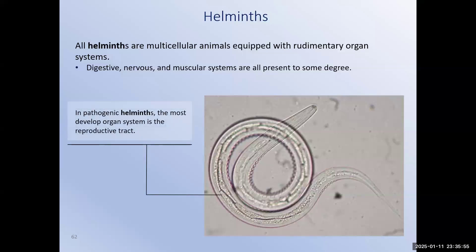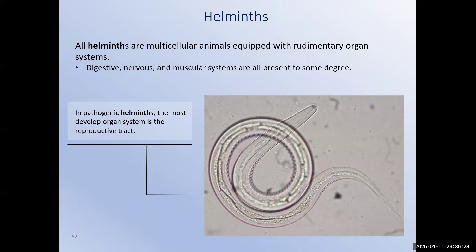Parasitic worms put us in the territory of multicellular organisms. Being multicellular comes with greater complexity than the microorganisms we've studied so far. Being a collection of cells allows certain members of the group to specialize, leading to the development of simple organ systems for the first time. Most helminths have at least a simple nervous system, simple muscular system, and a gastrointestinal tract. The most well-developed organ system in a parasitic worm, by far, is the reproductive tract — they are just little baby worm-making machines.